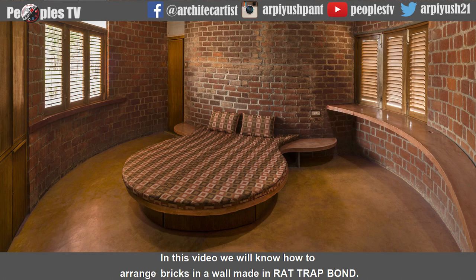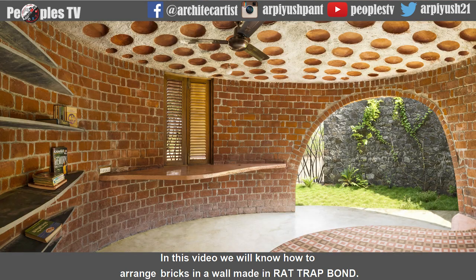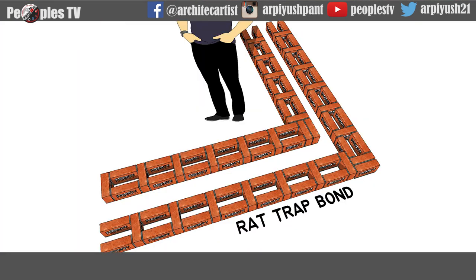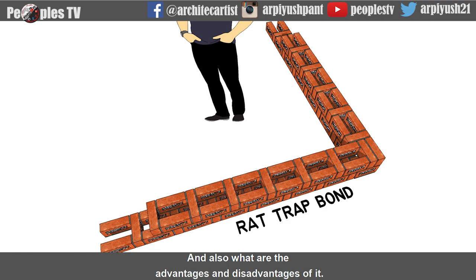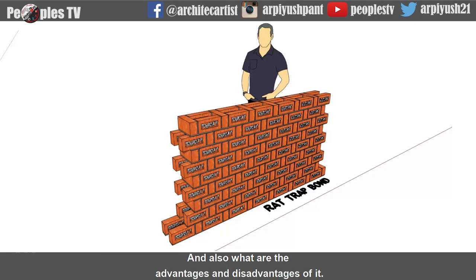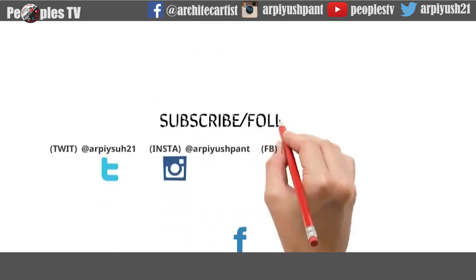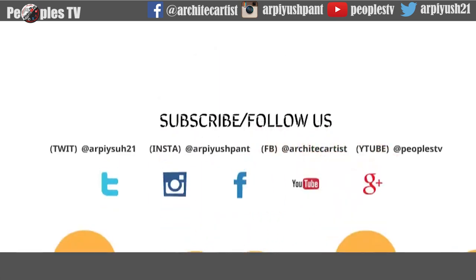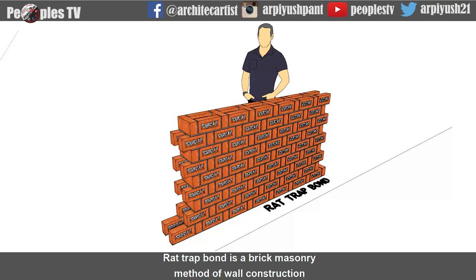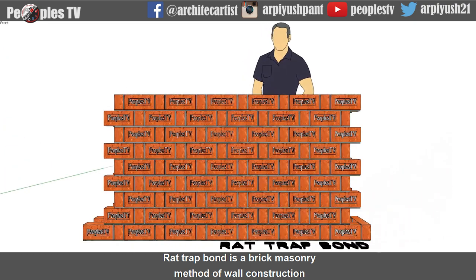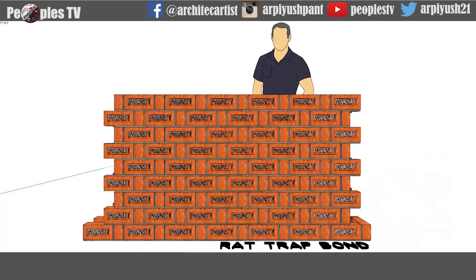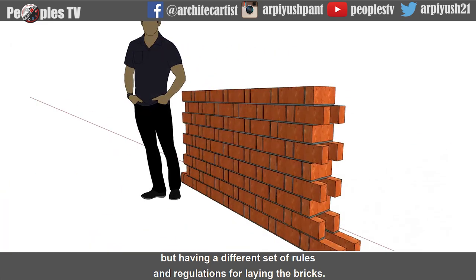In this video, we will learn how to arrange bricks in a wall made in rat trap bond, and also what are the advantages and disadvantages of it. Rat trap bond is a brick masonry method of wall construction, just like English bond and Flemish bond, but having a different set of rules and regulations for laying the bricks.